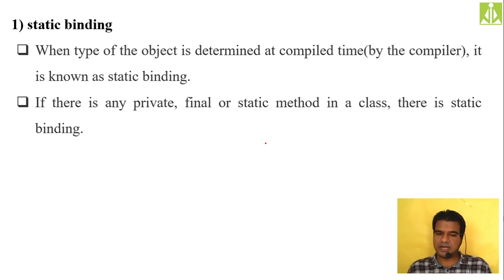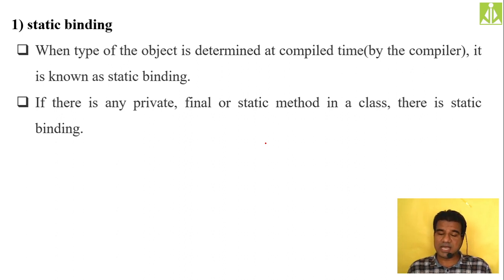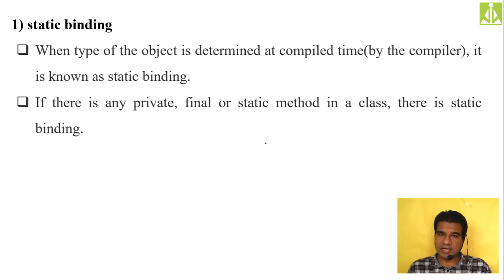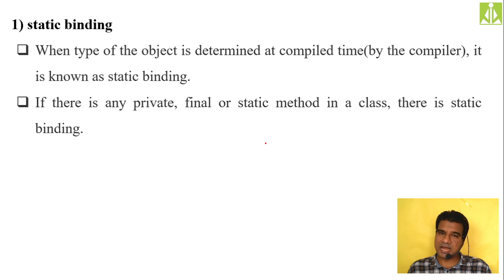Static binding: when the type of the object is determined at compile time by the compiler, it is known as static binding. When you have private variables, final variables, or static ones inside your class, to establish the connection with those private, final, or static methods, you must go for static binding only — because you cannot invoke these methods at the time of run using the normal dynamic approach.